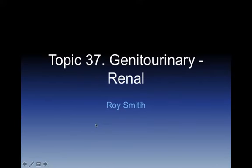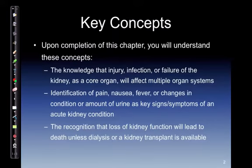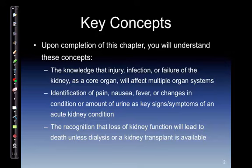This is topic 37, genitourinary and renal. Key concepts: upon completion of this chapter, you will understand that injury, infection, or failure of the kidney as a core organ will affect multiple organ systems. Identification of pain, nausea, fever, or changes in condition or amount of urine are key signs and symptoms of acute kidney condition. The recognition that loss of kidney function will lead to death unless dialysis or kidney transplant is available.